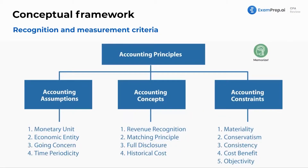Lastly, we've got our recognition and measurement criteria. All this stuff you should remember from your basic financial accounting courses, so you probably have seen this before. The monetary unit assumption basically says we are using some sort of monetary unit such as the US dollar — maybe we'll be using Bitcoin in the future. The economic entity assumption means we're using a company, an LLC — it is an actual economic entity.